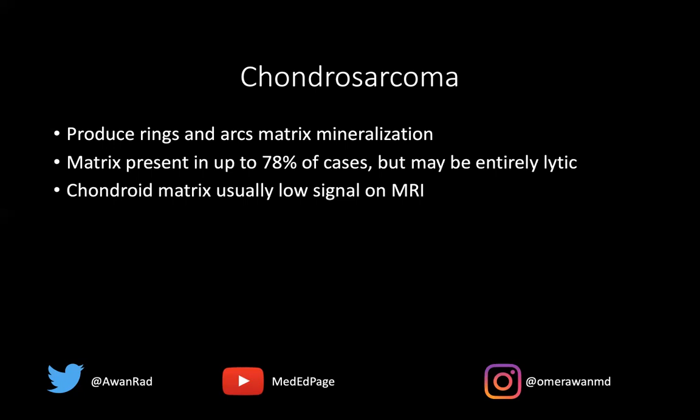Usually the chondromatrix is low signal on MRI, and that can be a clue that we're dealing with a chondrosarcoma. It's important to discuss enchondroma versus chondrosarcoma. An enchondroma is a benign cartilage lesion, while a chondrosarcoma is malignant. Particularly in the hands and feet, if we see a lucent lesion that's cartilage-forming, it's typically an enchondroma.